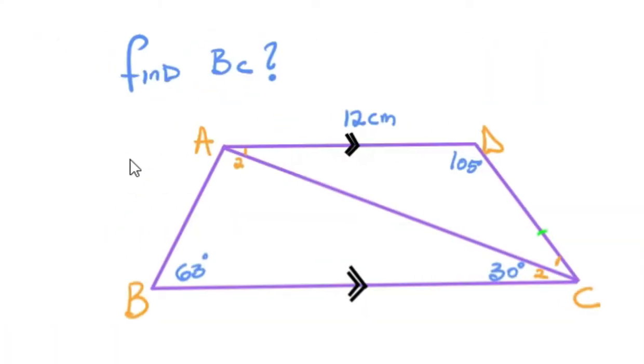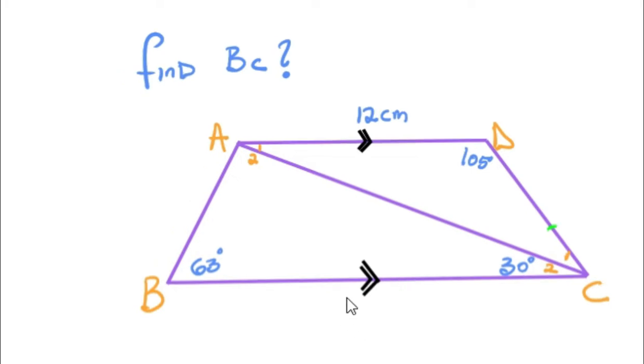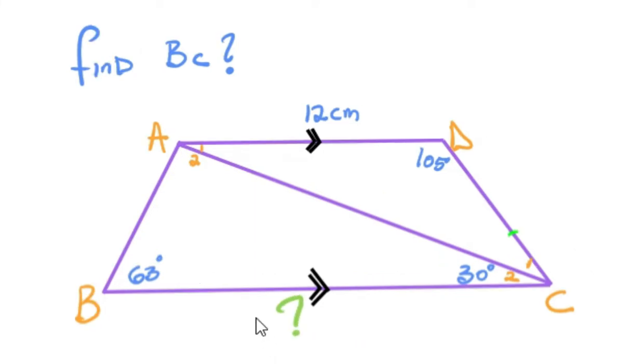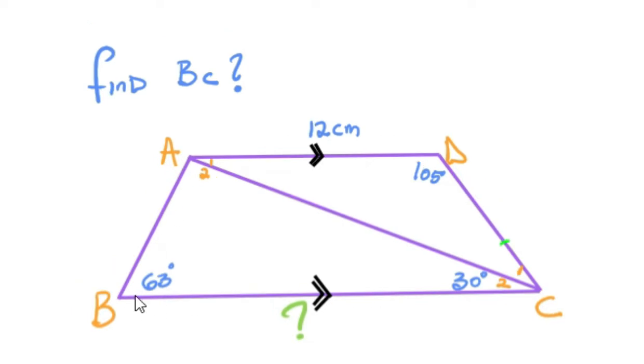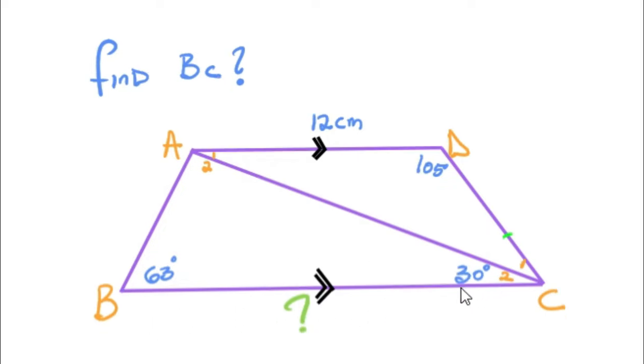This question asks us to find BC. This is a classic example of 2D trig. You're trying to find this side that you have over here. For you to determine the value for BC, BC is in triangle ABC. And in triangle ABC, there isn't enough information for you to calculate the value for BC.